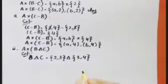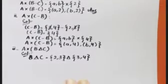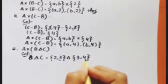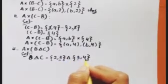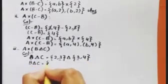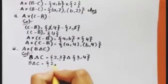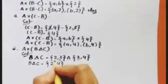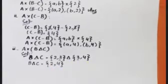In symmetric difference, we do not write the common members in the answer. So we leave out 3 since it appears in both. We are left with 2 from B and 4 from C. Therefore B symmetric difference C equals {2, 4}.